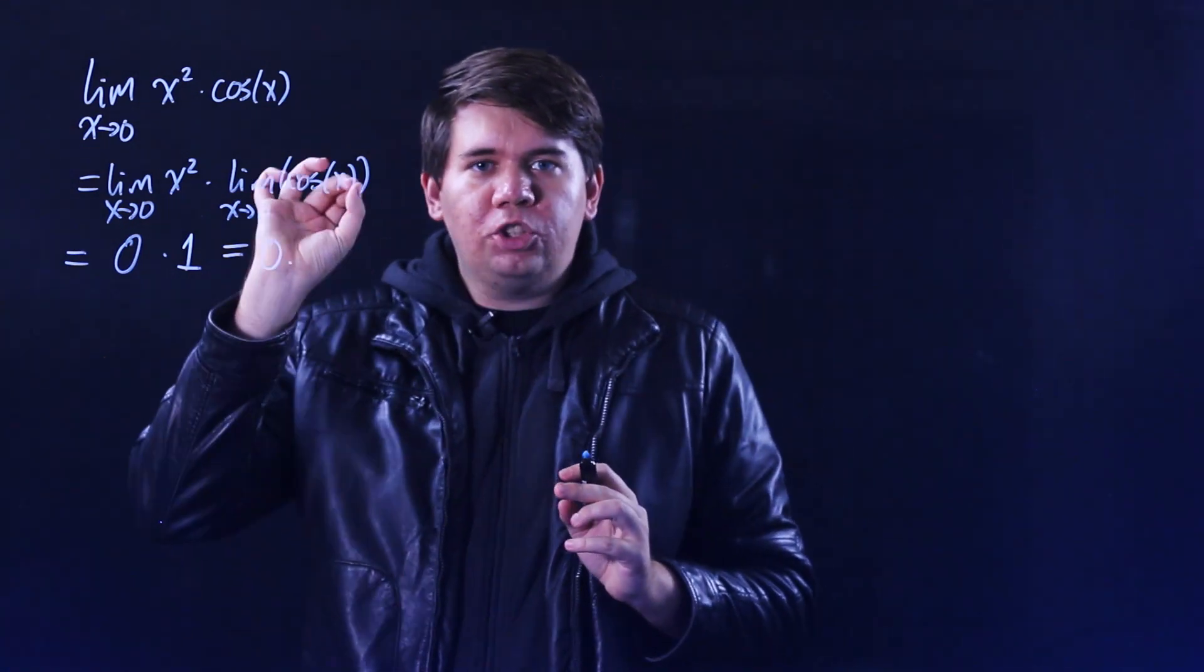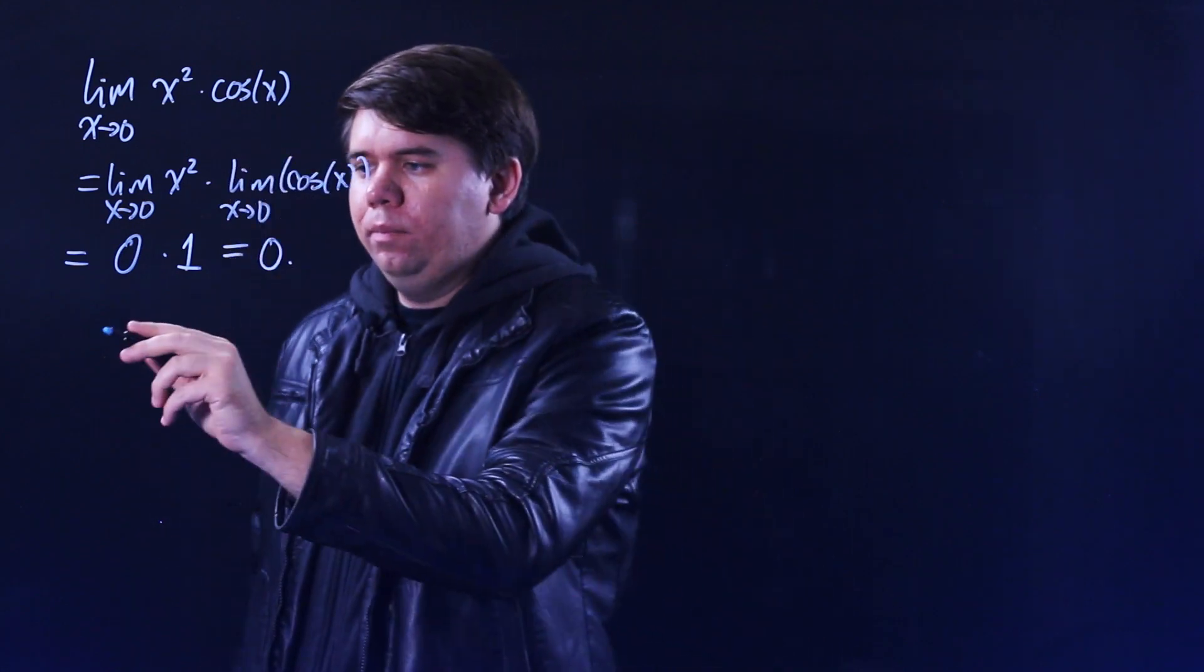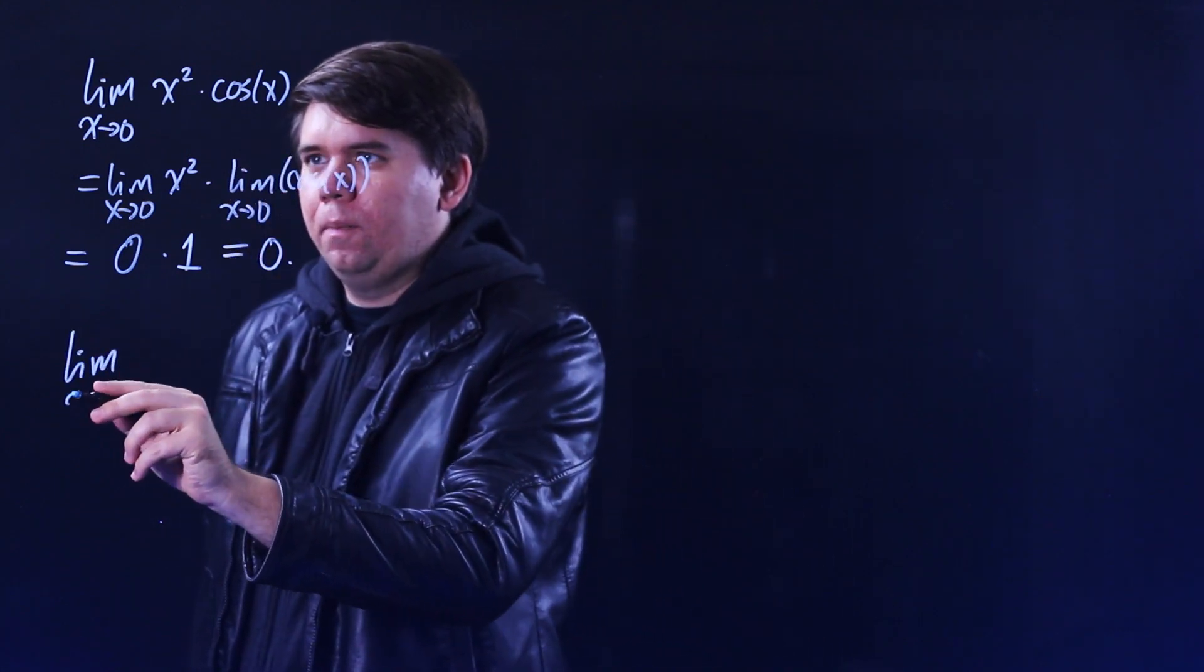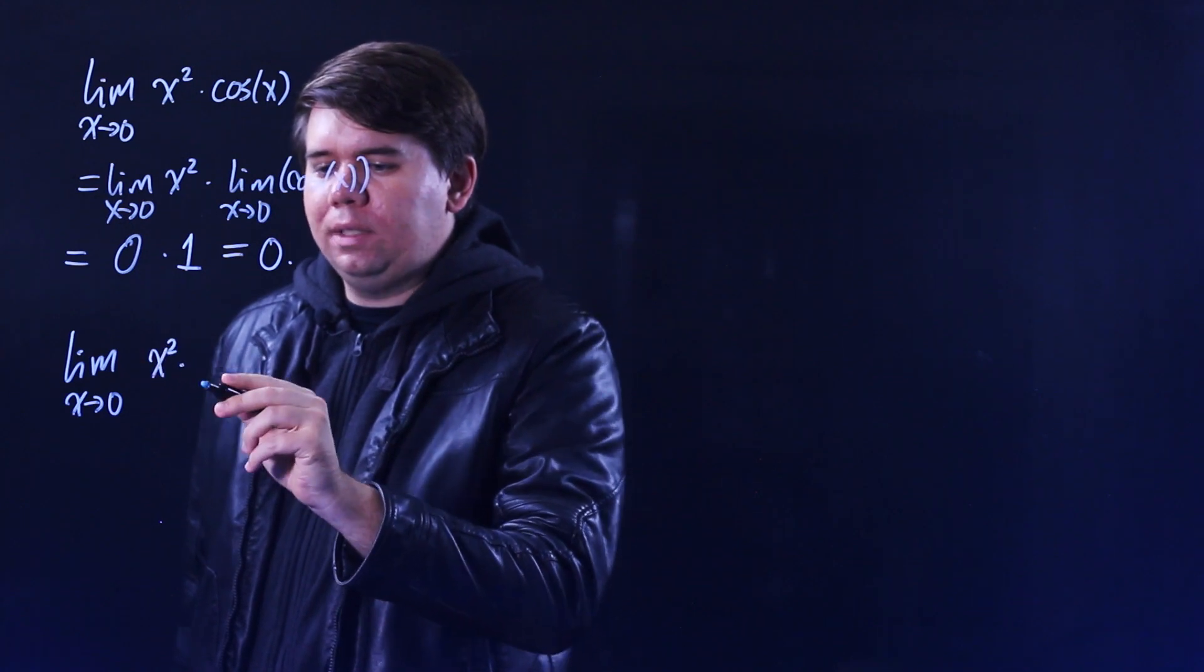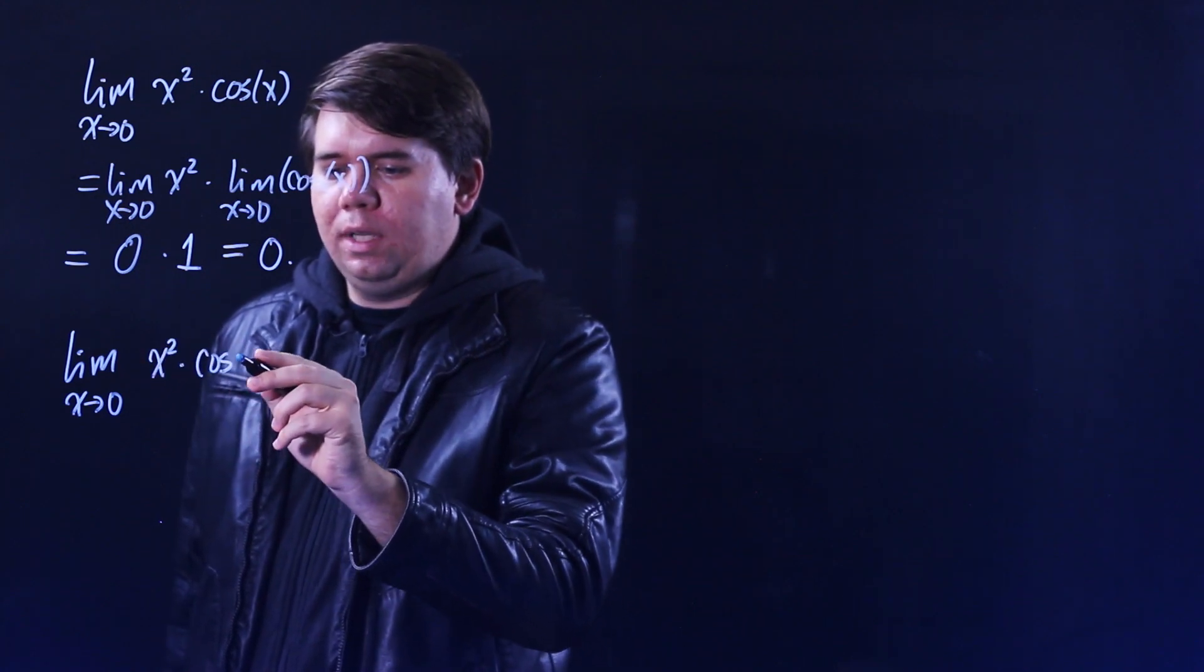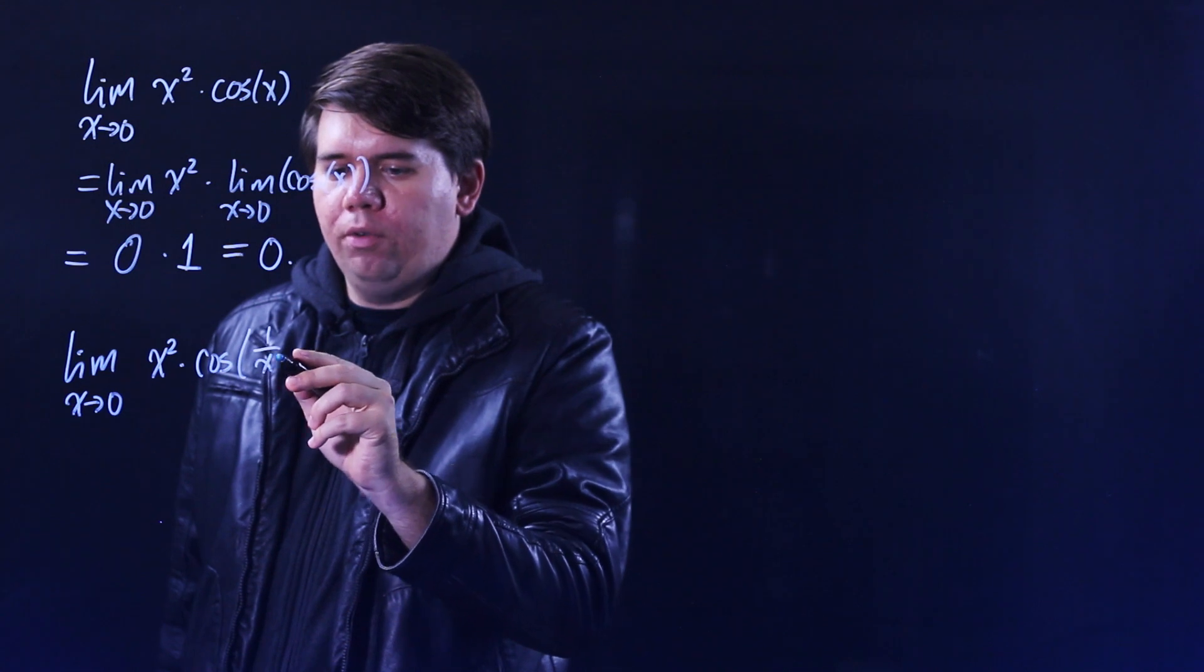Fine. But what if we were just to slightly change the problem to make it the limit as x goes to zero of x squared times cosine of one over x?